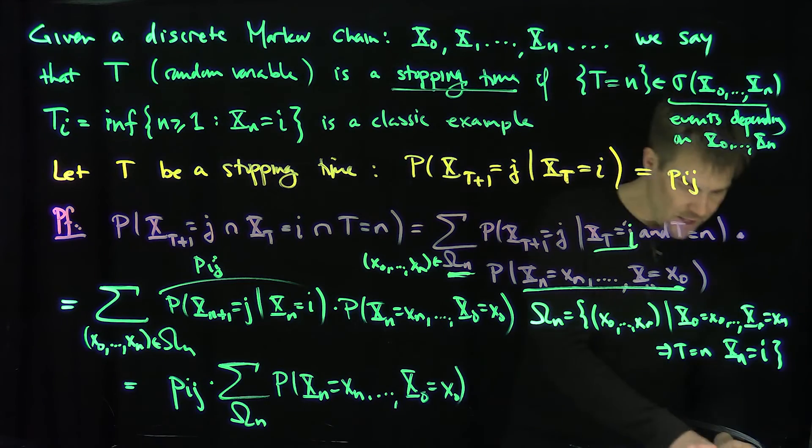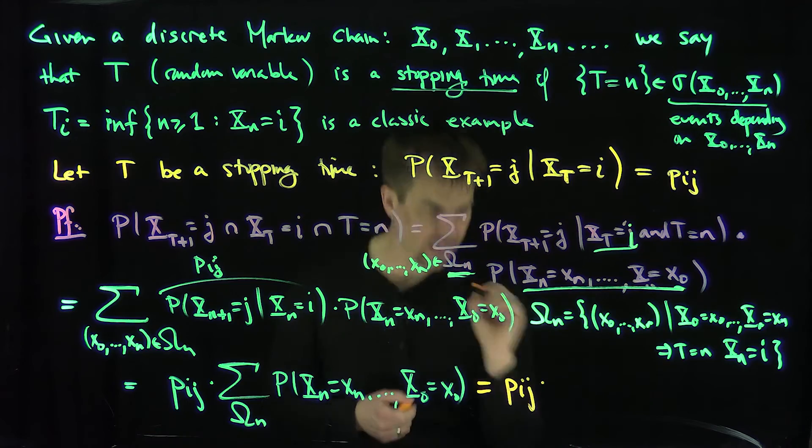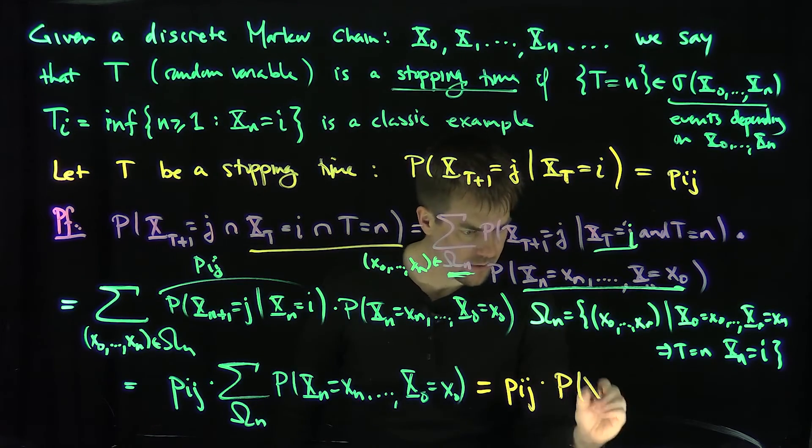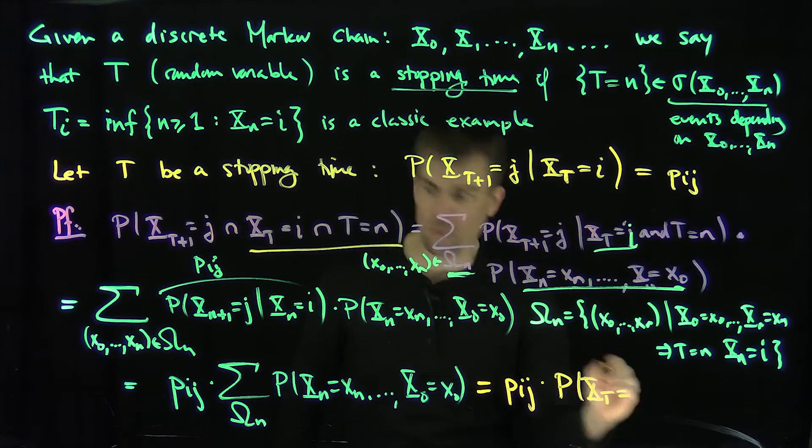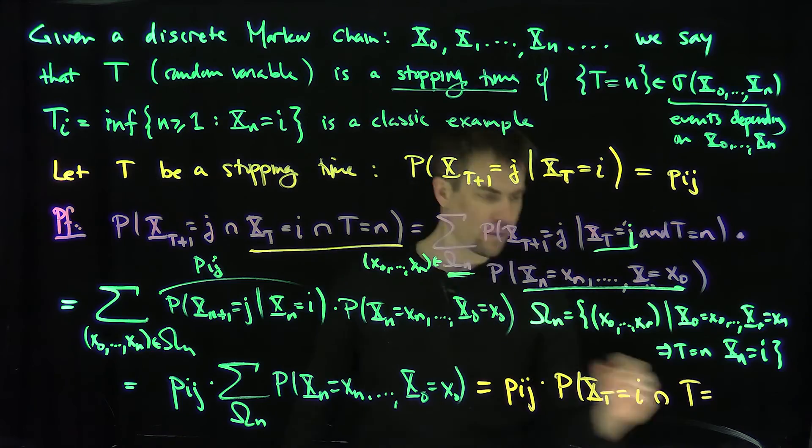Now this of course is just our ordinary transition probability. This is just p_ij. So this becomes p_ij times the sum over here, the sum over omega_n. I'm going to suppress the notation of all these values over here. P of x_n equals little x_n, all the way down to x_0 equals little x_0. But that's exactly equal to what? That's exactly equal to p_ij times the probability that x_t is equal to i and t is equal to n.